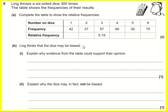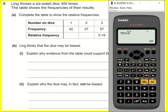We're being asked to calculate relative frequency. To do that, you take your frequency and divide it by the total amount — it tells you the proportion. So if we take the one that's already been done, it's 57 divided by 300, which gives us 0.19.